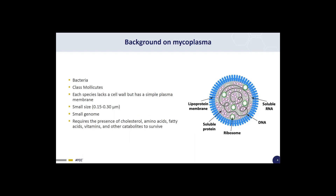A little bit of background on mycoplasma: they are bacteria, classed as mollicutes due to their lack of cell wall. They do have a simple lipoprotein membrane, as you can see in the figure. They are also very small in size — in fact, the smallest known mycoplasma bacteria is the species Mycoplasma genitalium. Mycoplasmas need to feed off of their host cells and require the presence of several metabolites like cholesterol and vitamins to survive. You can see a depiction of a mycoplasma bacterium in the figure on the right.